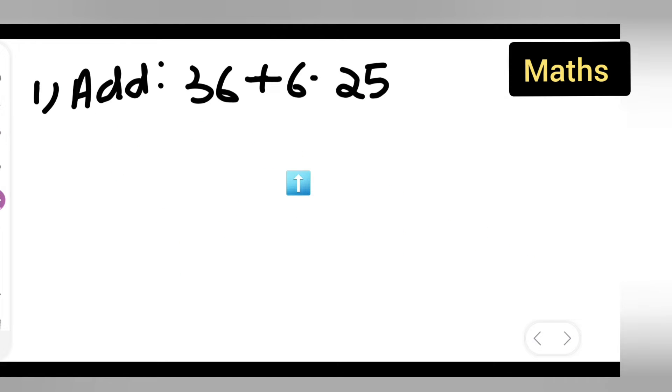So basically how you are going to add, first take down the question: add 36 plus 6.25. So first thing what you are going to do is write down 6.25 as it is, or you can even write it like this.